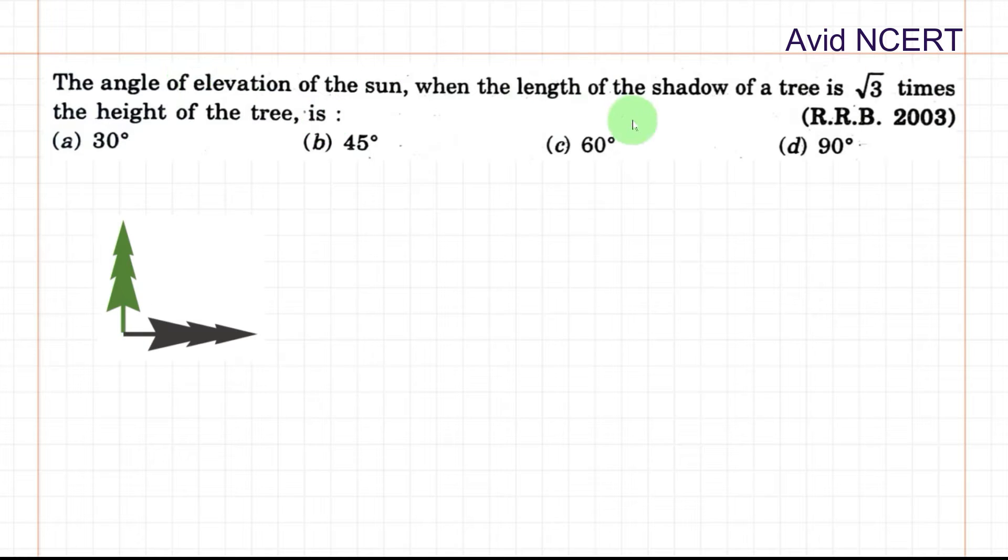From the question, the length of the shadow of a tree is √3 times height of the tree. So if this is the height of the tree, the shadow of the tree is √3 times height, √3h.